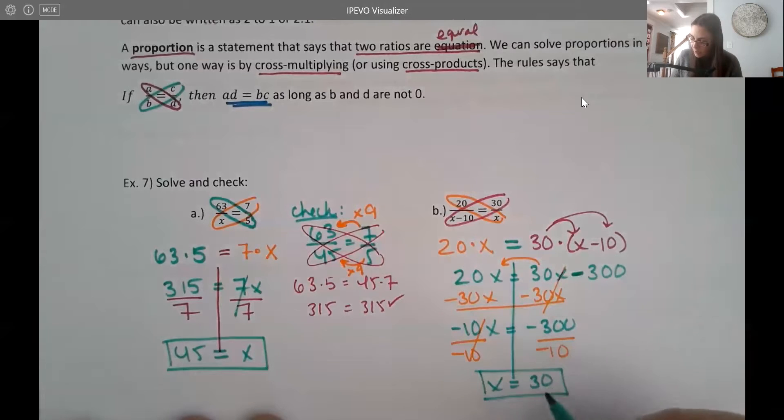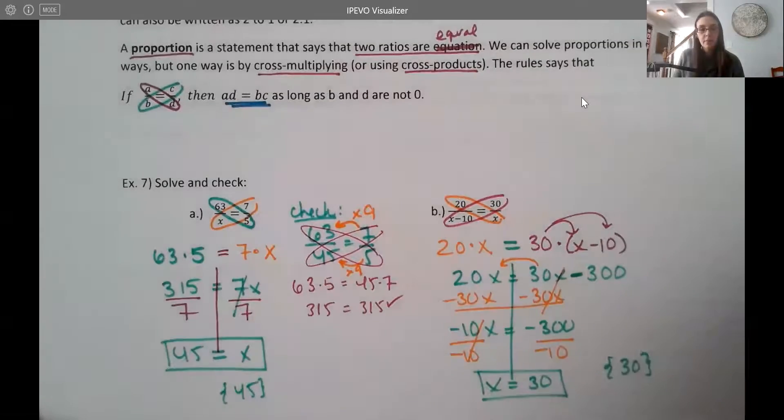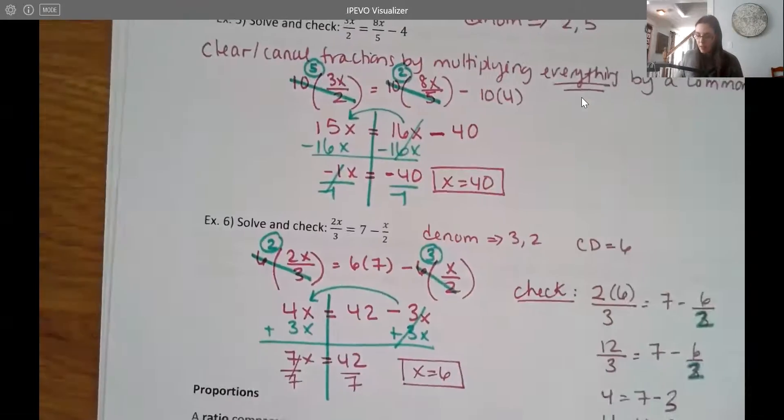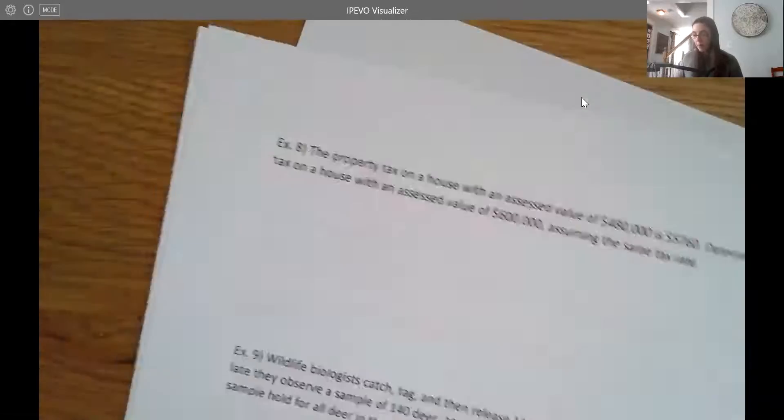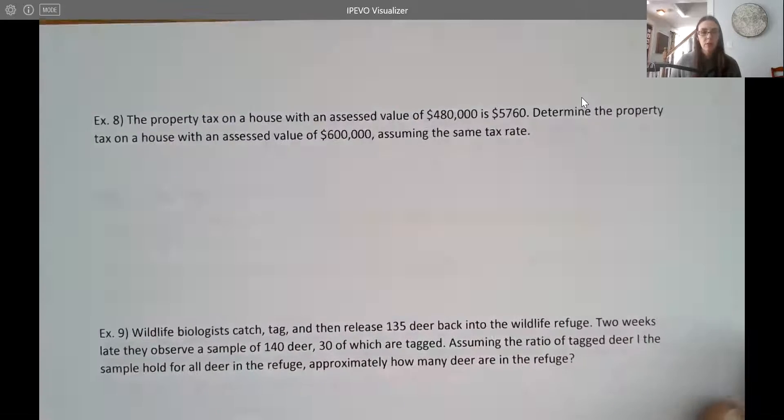So our solution set here, again, I've been using this kind of more straightforward notation. But if you need to write it as a set, your solution set here is 30. Your solution set here is 45, and so on. Now, that's how you solve your basic proportions. But proportions are really nice, particularly for real world applications. So I want to do some of those examples here too.